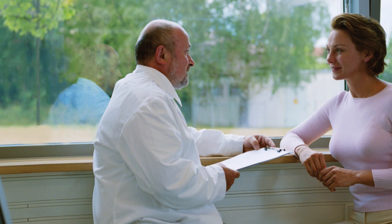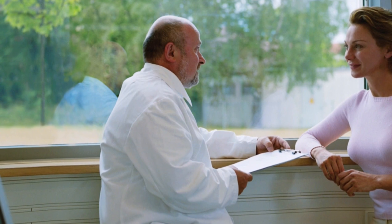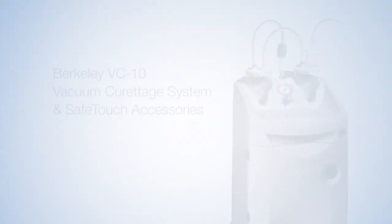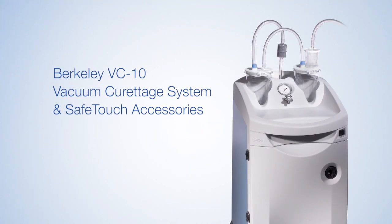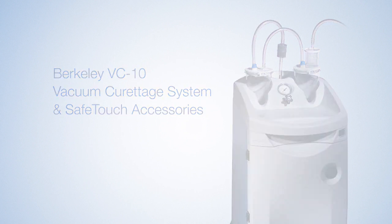The Berkeley VC10 vacuum curettage system from ACMI was developed with the nurse, surgeon, and patient in mind. For over 40 years, Olympus has provided quality vacuum curettage products, including the Berkeley pumps and SafeTouch accessory components. The Berkeley VC10 system is the latest product that provides effective and efficient uterine aspiration in an aesthetically updated, ergonomic, and quietly operating system.